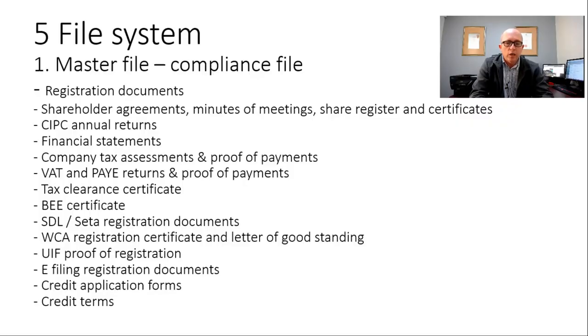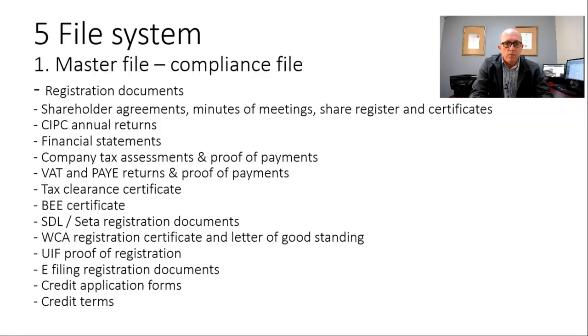Your tax clearance certificate is also important to have on hand — if anybody asks for tax clearance you can supply it. Your BEE certificate goes into the file. Any registrations you have, such as SDL receipt of registration documents — a lot of people forget about those. Also your Workman's Compensation registration certificate and your letter of good standing, especially if you work on site. Construction companies ask for that letter of good standing quite often, so keep a current copy on file.